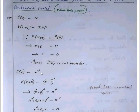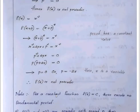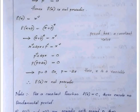Next, f of x equals x squared. Then f of x plus p equals (x plus p) squared equals x squared implies p equals 0 or p equals minus 2x. Since x is variable, p cannot be a fixed real number, so x squared is not periodic.